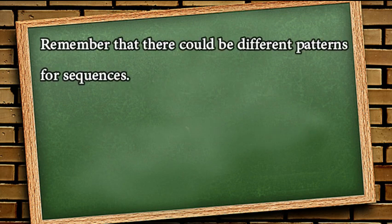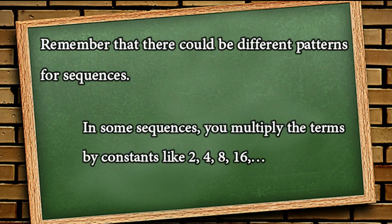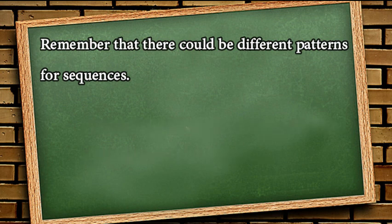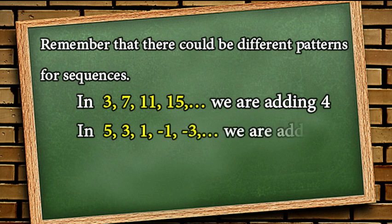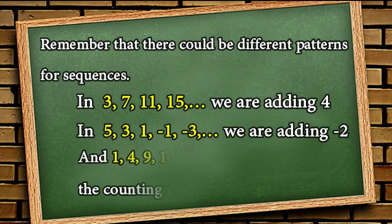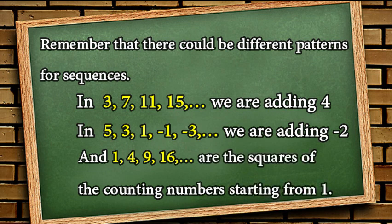Remember that there could be different patterns for sequences. In some sequences, you multiply the terms by constants like 2, 4, 8, 16, and so on and so forth. In 3, 7, 11, 15, we are adding 4. In the sequence 5, 3, 1, negative 1, and negative 3, we are adding negative 2. And in the sequence 1, 4, 9, 16, these are the squares of the counting numbers starting from 1.